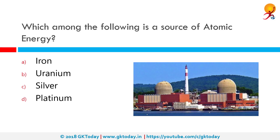Which among the following is a source of atomic energy? The correct answer is uranium. Uranium is a weakly radioactive substance because all its isotopes are unstable. Uranium-235 is the only naturally occurring fissile isotope, which makes it widely used in nuclear power plants and nuclear weapons. Uranium-238 is fissionable by fast neutrons and is fertile, meaning it can be transmuted to fissile plutonium-239 in a nuclear reactor. Another fissile isotope, uranium-233, can be produced from natural thorium and is also important in nuclear technology.